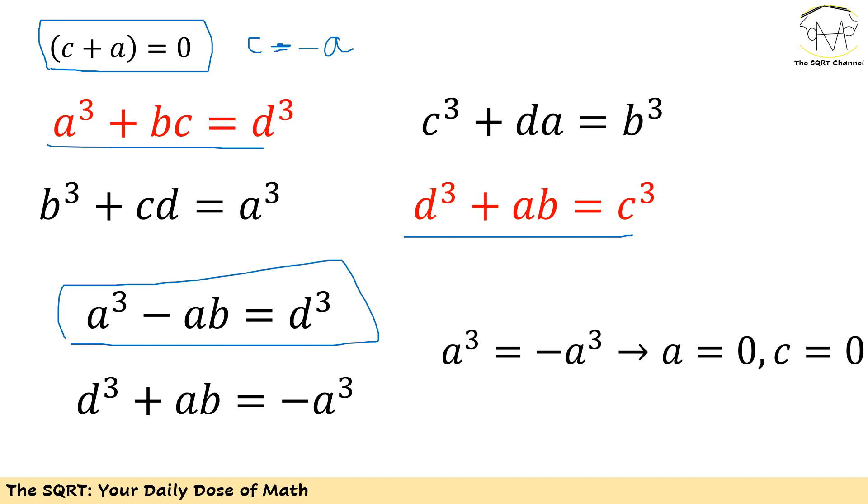Replacing that for the first equation, instead of using c I'm going to use -a, so I will end up with a³ - ab = d³. I'm going to use the same approach but this time in the last equation I will have d³ + ab = c³.